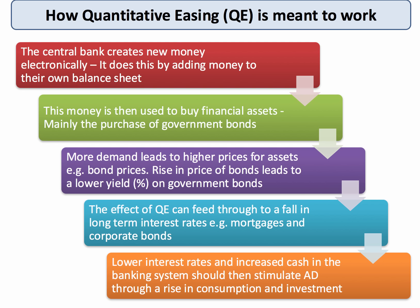Those lower interest rates, allied to the increased cash in the banking system — keep in mind that when the Bank of England buys a bond off a bank, the Bank of England gets the bond and the bank gets the cash — should increase the base supply of money in the economy and stimulate aggregate demand through a rise in household consumption and hopefully also a rise in business investment. To summarise: the central bank creates new money, goes into the bond markets to buy assets off the commercial banks, they receive cash which increases their liquidity, and it drives down the long-term interest rate, which in theory should stimulate more investment and more consumption.